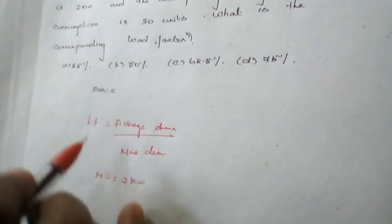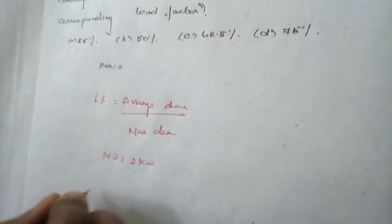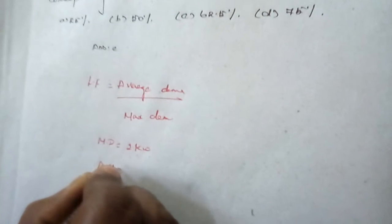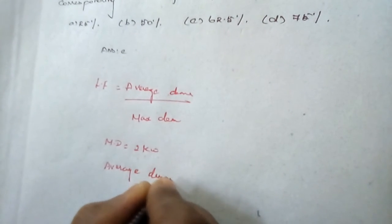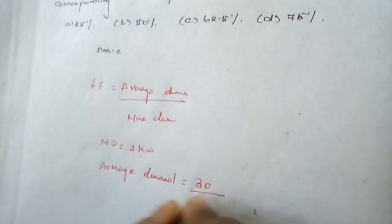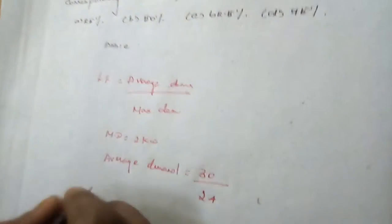We don't know the average demand, so we need to find it first. Given that 30 units of daily energy consumption are provided, the average demand equals energy consumption divided by hours, which is 30 divided by 24. We get the value as 1.25 kilowatt.